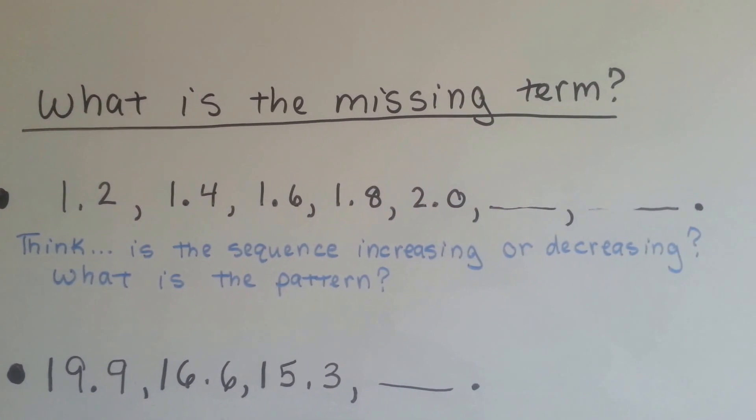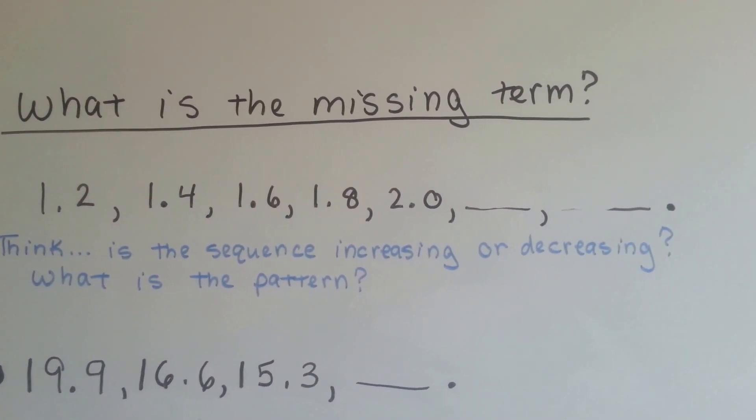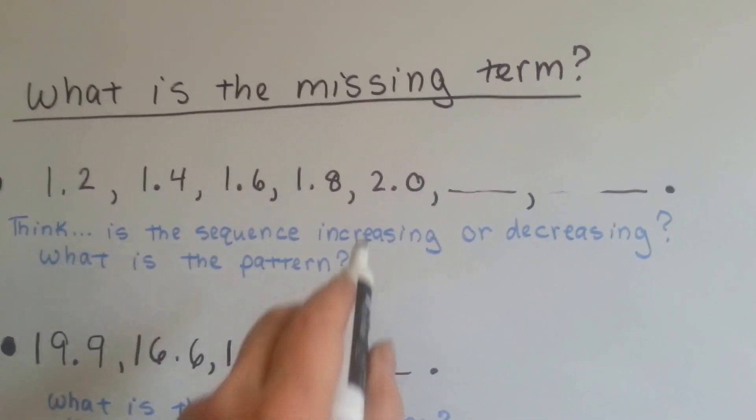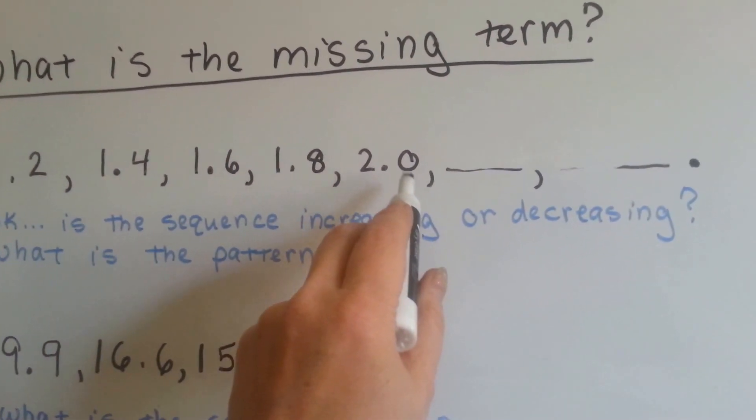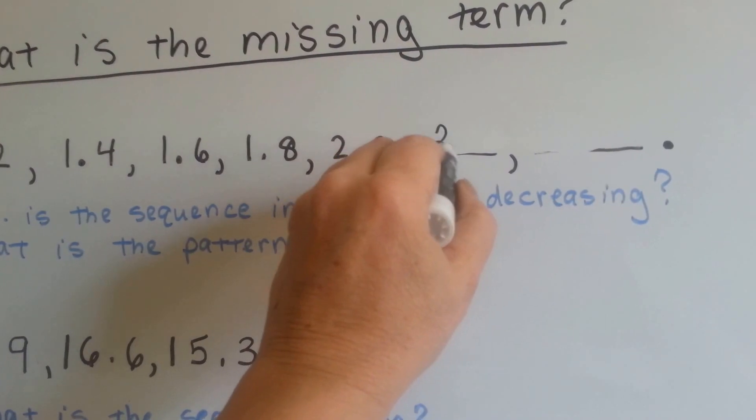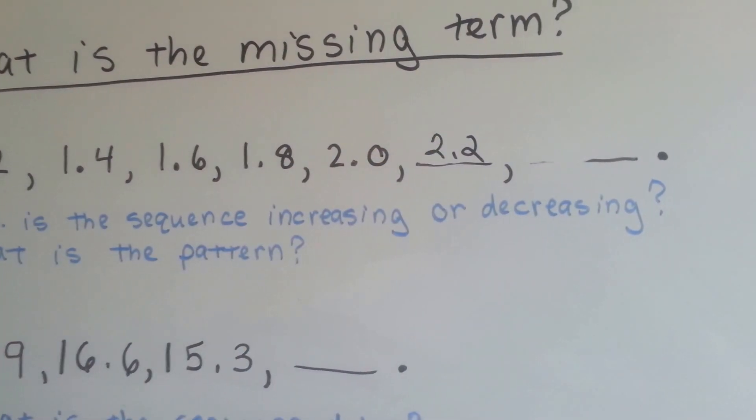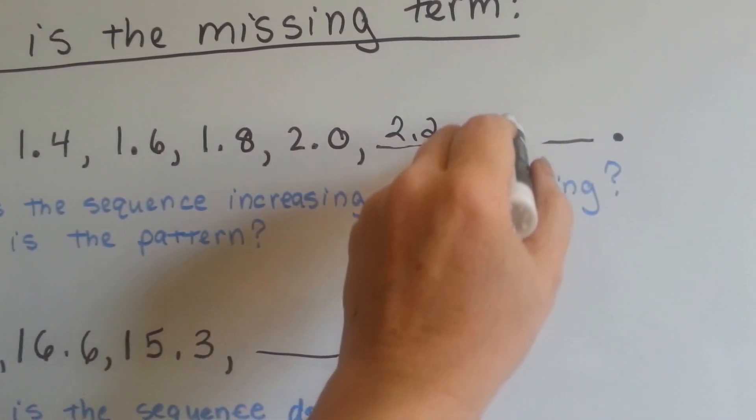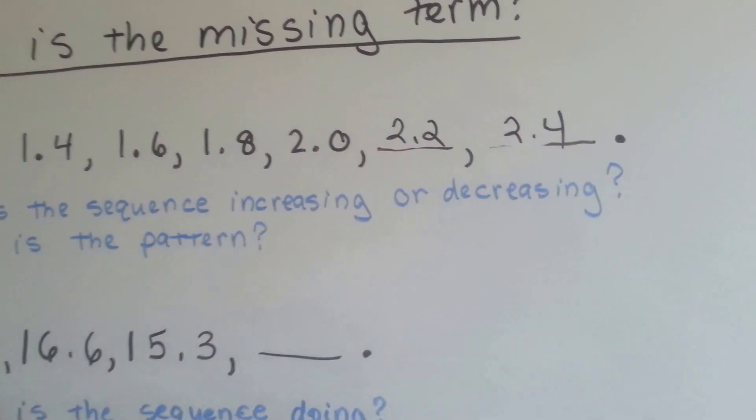1 and 2 tenths, 1 and 4 tenths, 1 and 6 tenths, 1 and 8 tenths. Well, if you said it's increasing by 2 tenths, you're correct. So the very next number would be 2 tenths more than this, or 2.2, right? 2 and 2 tenths. And then the next number would be 2 tenths more, 2 and 4 tenths, wouldn't it?